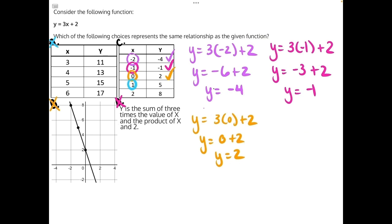Next we'll plug in 1. y is equal to 3 times 1, plus 2. 3 times 1 is equal to 3 plus 2, which is then equal to 5, making that correct.